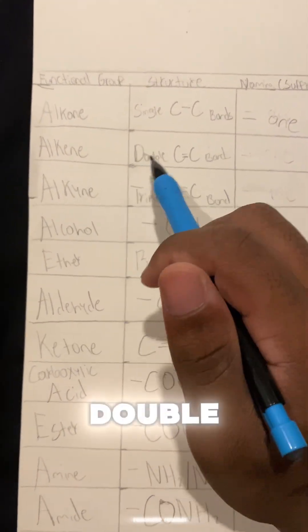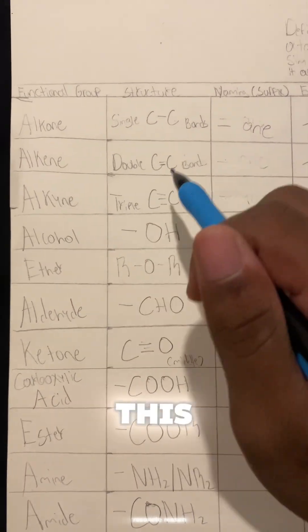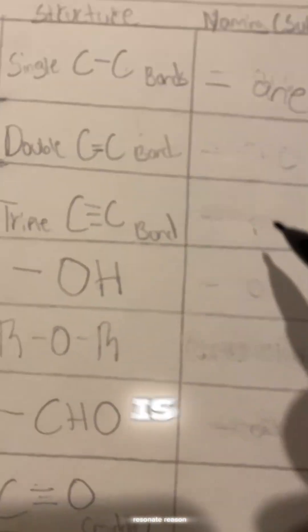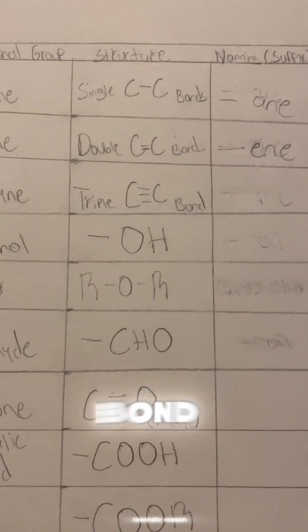Alkene. An alkene is a double carbon bond. We haven't worked with these yet, so I'm about to explain how to do it, but the suffix for an alkene functional group is going to be 'ene'. So the suffix for a double carbon-carbon bond, or an alkene, is going to be 'ene'.